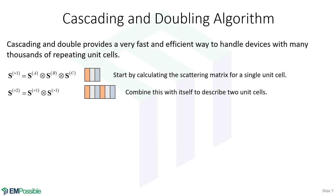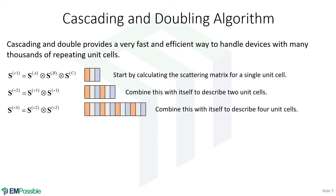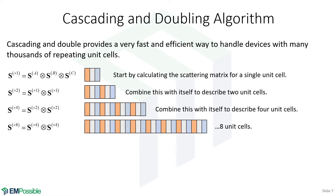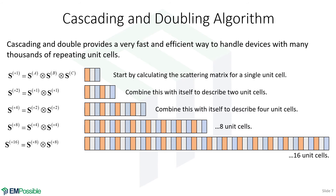Now suppose we take that one-unit-cell scattering matrix and do a Redheffer star product with itself — we get a scattering matrix describing two unit cells. Take that two-unit-cell scattering matrix and combine it with itself, and we have four unit cells. Do it again and we have eight unit cells, then 16, and so on.